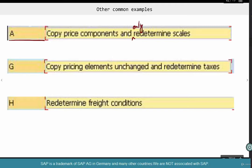Copy pricing components and only redetermine scales. That's the only thing that happens. Now, when would you want to do it? There are examples of situations where you want to use pricing type A to do repricing. Very simple.